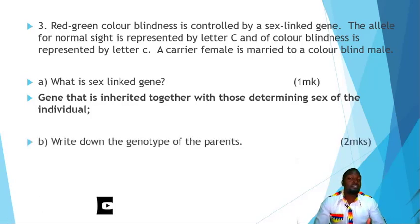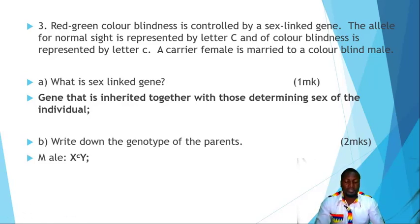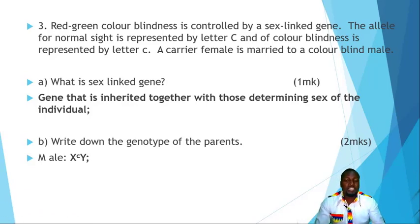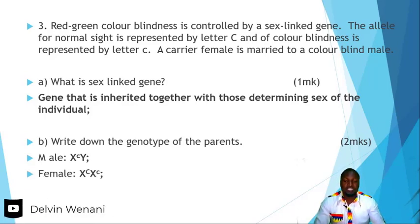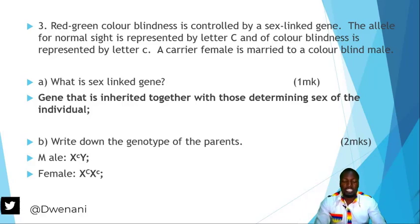Write down the genotypes of the parents. The male is colourblind, so his genotype is X(small c)Y. The female is a carrier, so her genotype is X(capital C)X(small c). That means the female is a carrier and the male is colourblind.